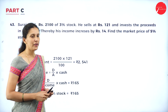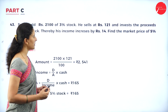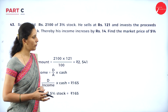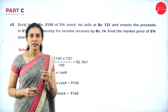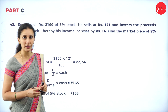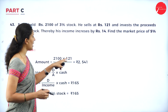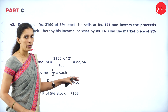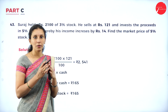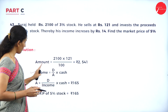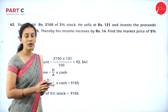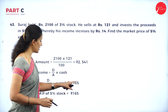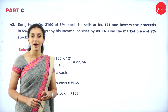Suraj held ₹2,100 of 3% stock. He sells it at ₹121 and invests the proceeds in 5% stock, thereby increasing his income by ₹14. Find the market price of 5% stock. First find the amount when selling at ₹121: 2100 × 121 / 100. Using the income formula, and noting the new income is increased by ₹14, use the same formula (amount = rate/income × cash) to get the market price of 5% stock as ₹165.